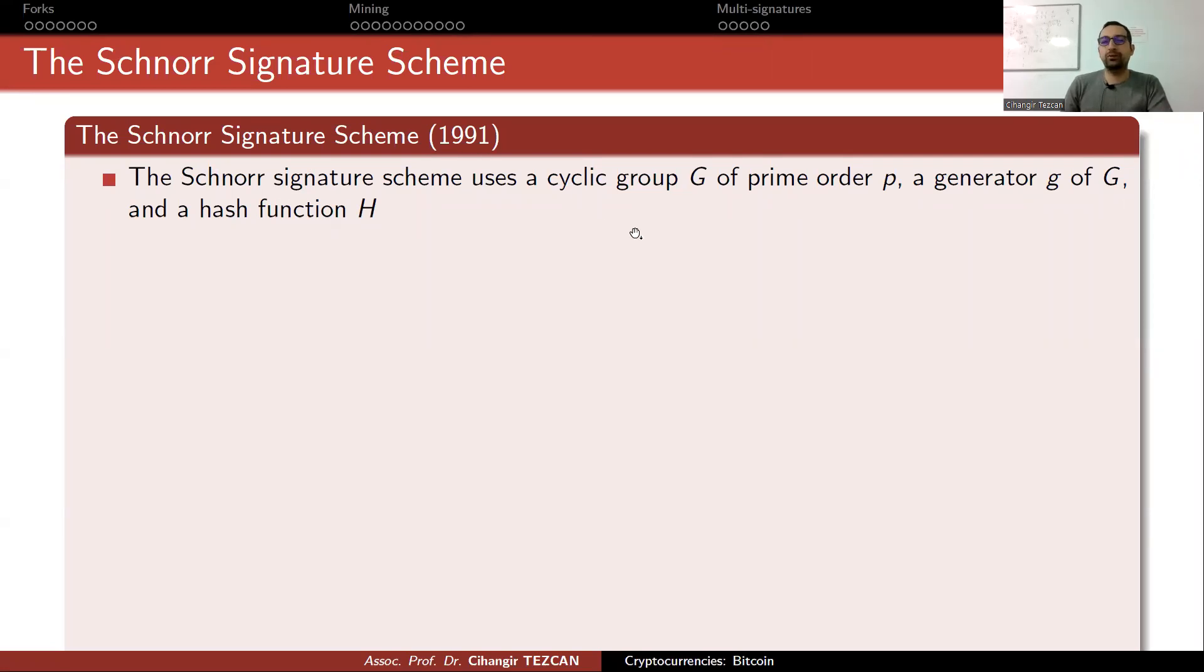So you might ask why Satoshi didn't use it in the first place, if it is so good, compared to elliptic curve digital signature algorithm. The thing was that this algorithm was patented at that time. This is why Satoshi couldn't use it. Around 2008, when Satoshi was working on Bitcoin, actually, this patent expired. So Satoshi could use it, but elliptic curve digital signature algorithm had been used for a very long time. So he had confidence in that algorithm. But since Schnorr signatures was patented, not much people used it. So he couldn't trust the algorithm. This is why it didn't come with Schnorr signatures in the first place.